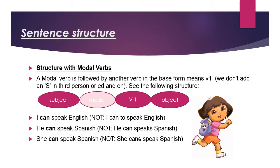Now let's look at the sentence structure when using modal verbs. A modal verb is always followed by another verb — we always have two verbs: one modal verb and one main verb, and that main verb is always in the first form, the basic form. We won't use any 's' or 'es', any 'ed', or any 'en'. The structure is: Subject + Modal Verb + Verb (first form) + Object.